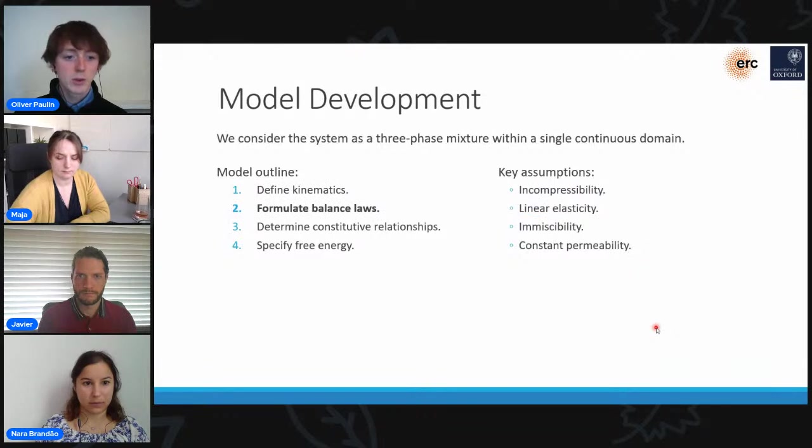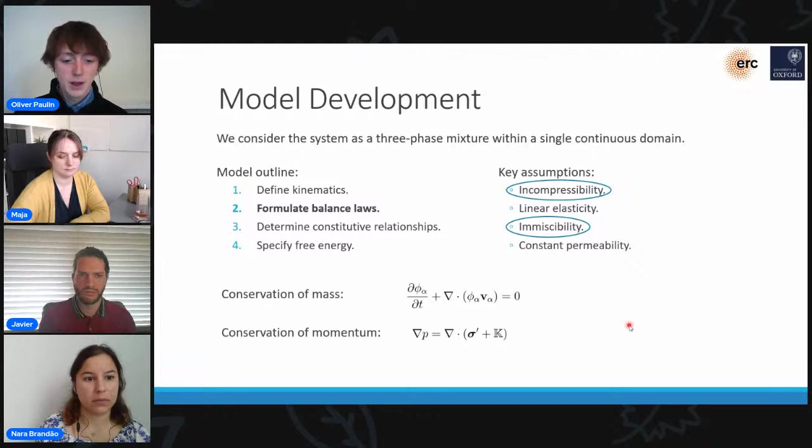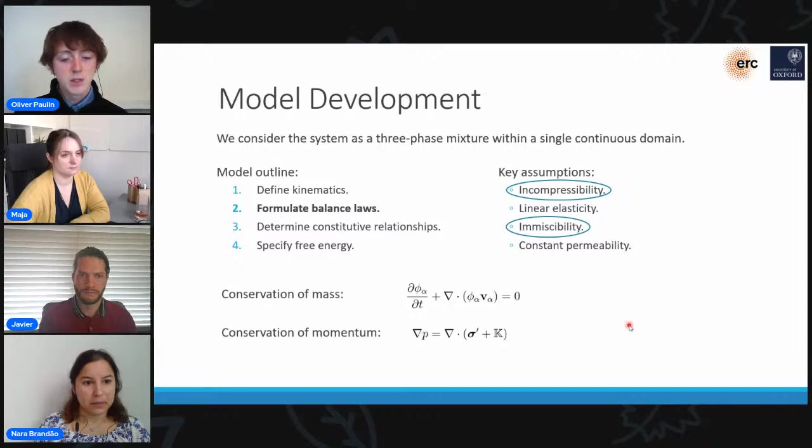In order to formulate balance laws between these different volume fractions, we start by considering conservation of mass, which you can see here. Because of the incompressibility assumption we've made, the density just cancelled out of this equation. And we're also going to make the assumption that the gas and the liquid are immiscible, so the gas can't dissolve into the liquid or exsolve out of it, which just means there are no sources or sink terms in this equation.